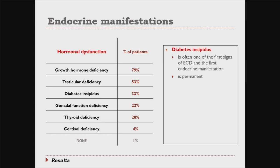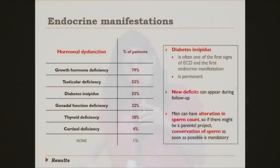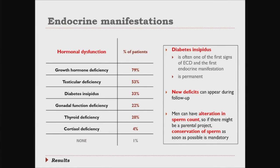Diabetes insipidus is often one of the first signs of ECD — it appears sometimes before all the other signs and is pretty often the first endocrine manifestation. Once you have diabetes insipidus, usually it's permanent. New deficits can appear during follow-up, so it's very important to evaluate regularly. Men can have an alteration in sperm count, so if patients are young and might have a parental project, it's absolutely mandatory to propose conservation of sperm, because the testicle can be destroyed by the histiocytosis.